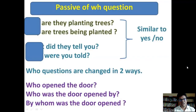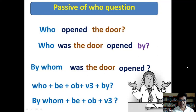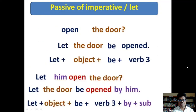For wh-questions, the pattern is similar to yes/no questions. 'Did they tell you?' → 'Were you told?' For 'who' questions, there are two ways to change: 'Who opened the door?' → 'Who was the door opened by?' or 'By whom was the door opened?' The structure is: who + be verb + object + past participle + by, with a question mark at the end.